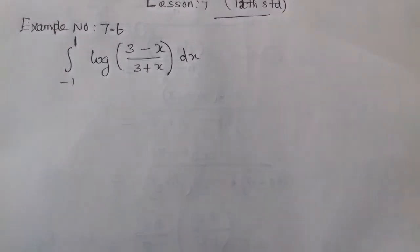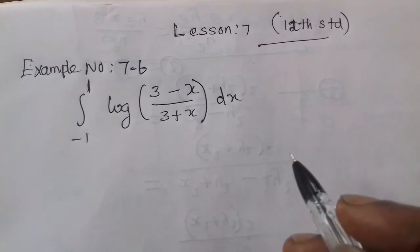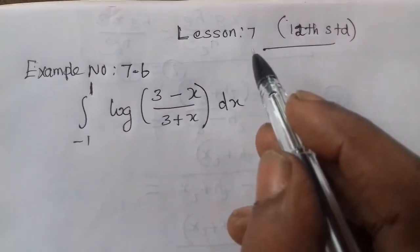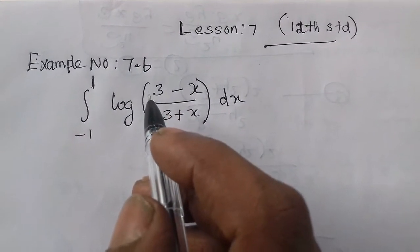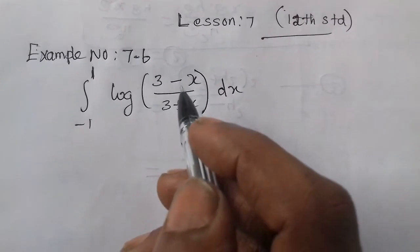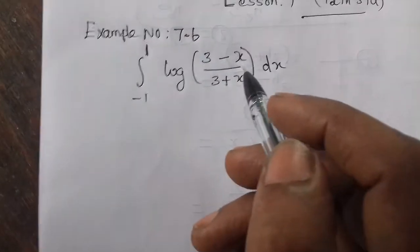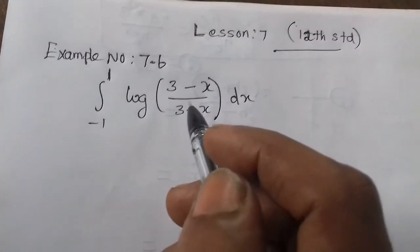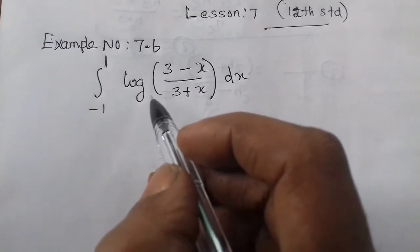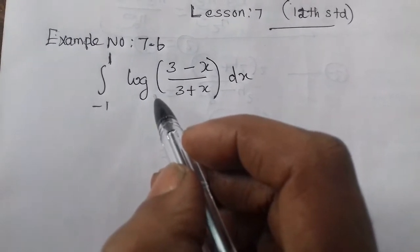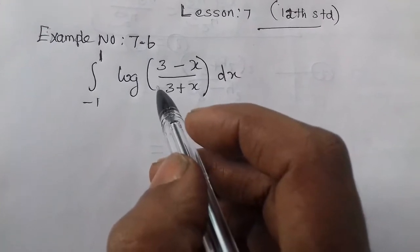I am going to tell you a problem. Example number 7.6: evaluate the integral from minus 1 to 1 of log((3 minus x) divided by (3 plus x)) dx.